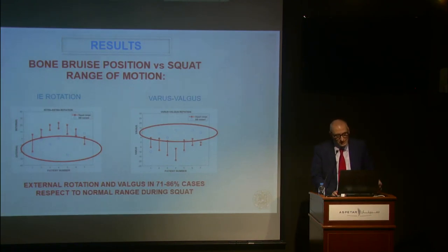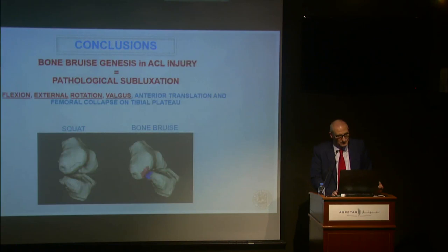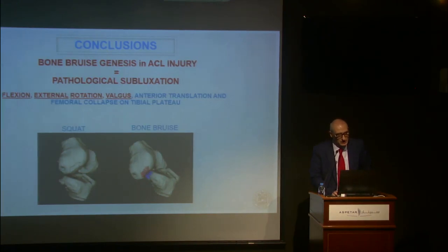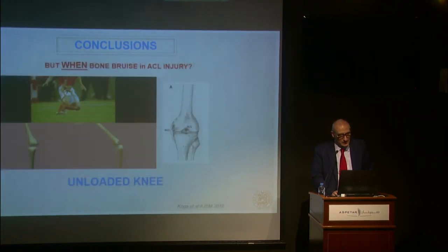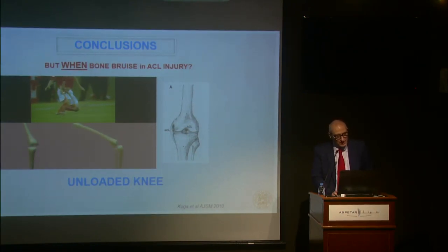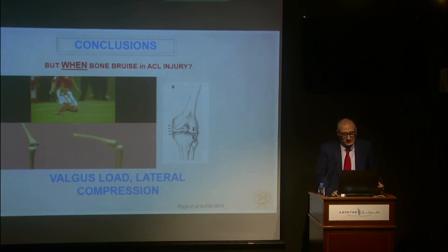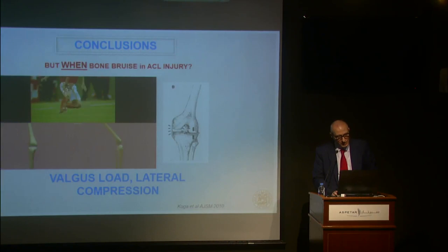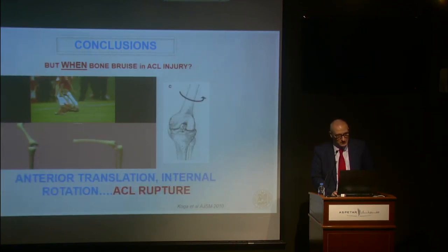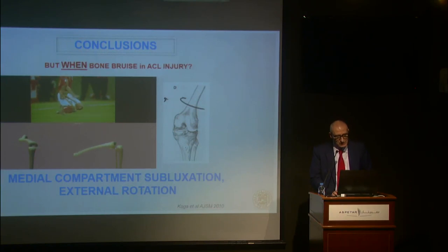The bone bruise genesis indicates ACL injury involves a pathological subluxation with flexion, external rotation, and valgus, which then gives anterior translation and femoral collapse on the tibial plateau. Coming back to the Koga study data: there is a valgus load and lateral compression, followed by anterior translation and internal rotation causing ACL rupture. After this, there is medial compartment subluxation and external rotation.